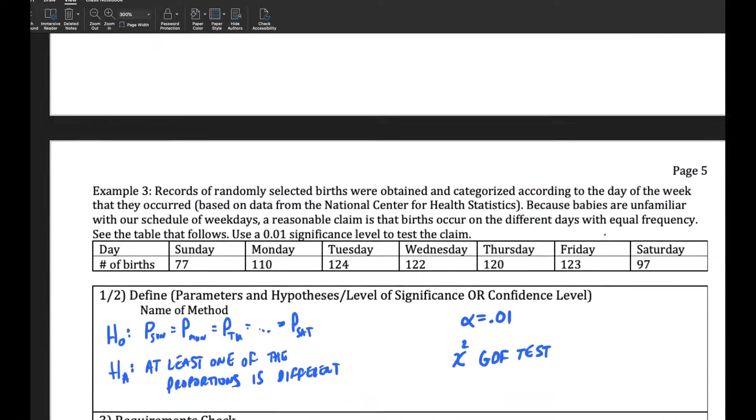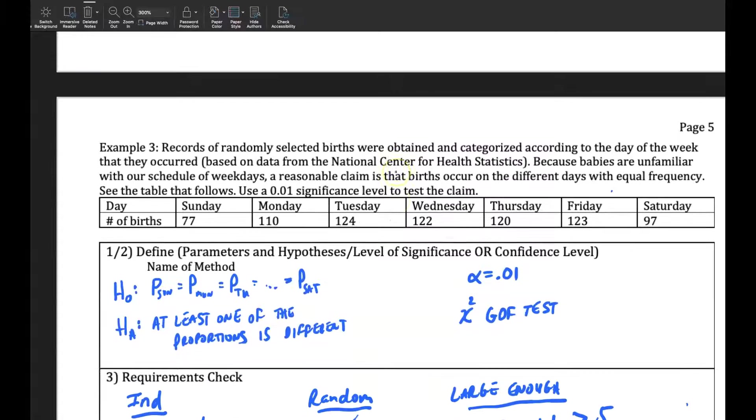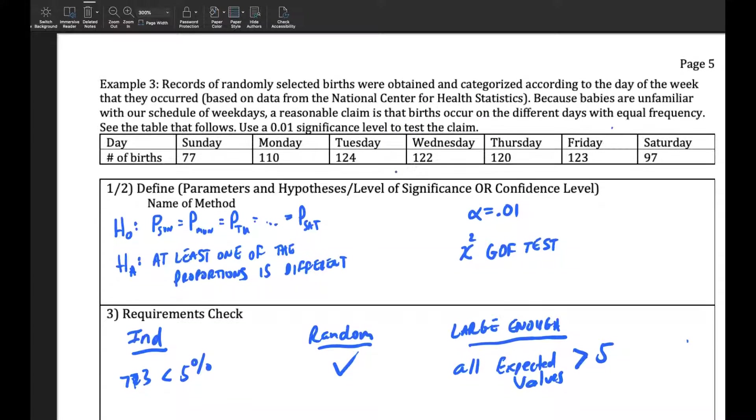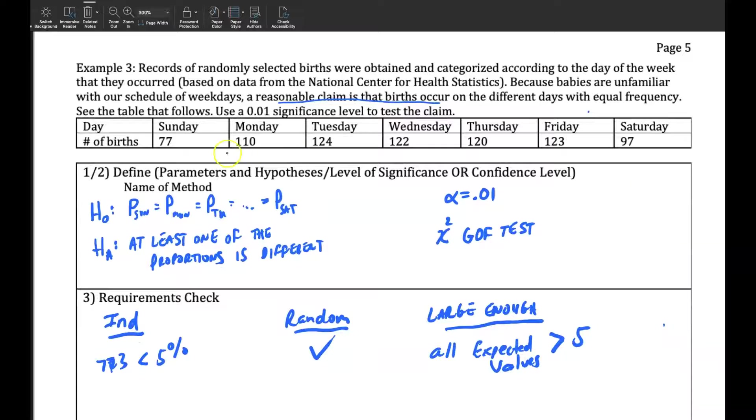Let's do a couple of more tests using StatCrunch. Let's go back to a goodness-of-fit test, a chi-squared one. And so looking at this one here, it's reasonable to claim that births occur on different days with equal frequency. So thinking about how many births happen,